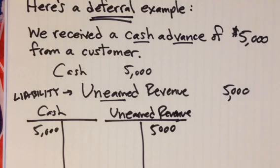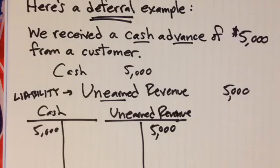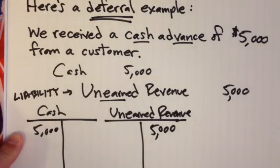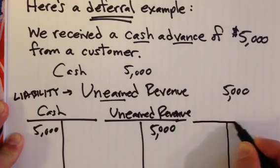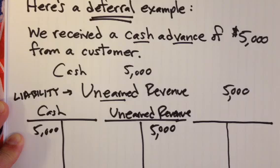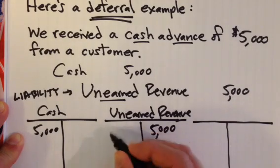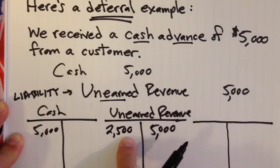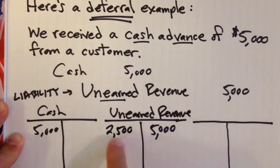What will happen if the next month, after we receive this cash advance, we do half of the work that we've been paid for? In our example, let's say we're going to do half of the work that we've been paid for in advance — the $5,000 worth. To make that adjustment on the books the following month, what would we debit and what would we credit? We'll show this in T-accounts. If we have done half the work the following month, at that time we will debit $2,500 to unearned revenue — half of the $5,000. That will reduce this liability.